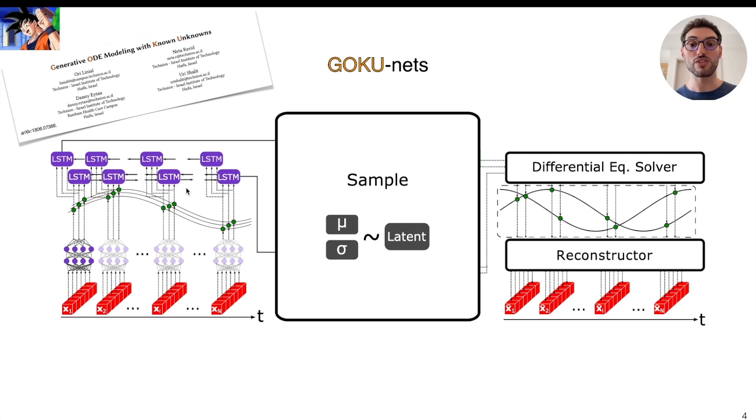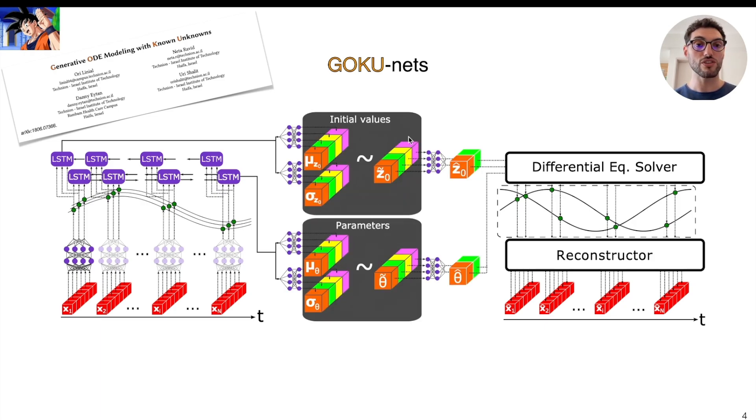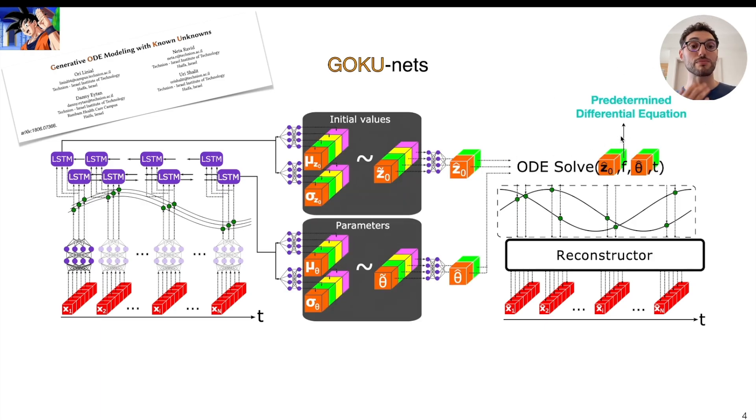Next, they are processed sequentially in order to learn the parameters and initial conditions of a differential equation which is explicitly provided, allowing you to incorporate some prior knowledge of your system. Then the equations are solved, and lastly, the trajectories are transformed back to the original space.